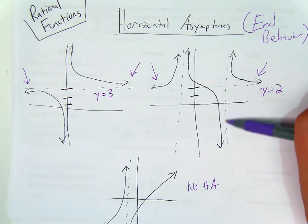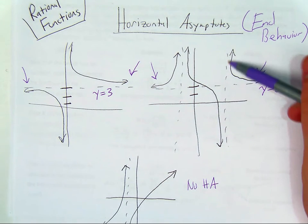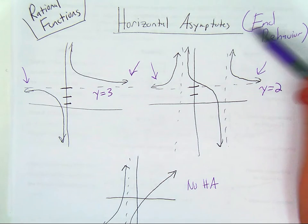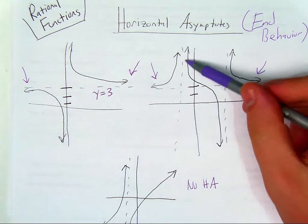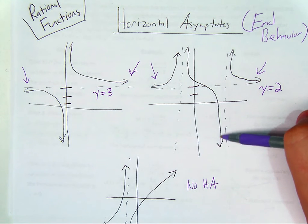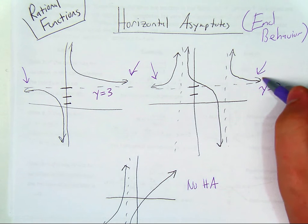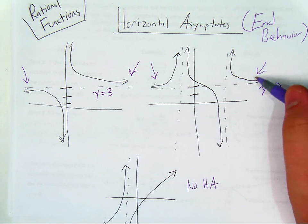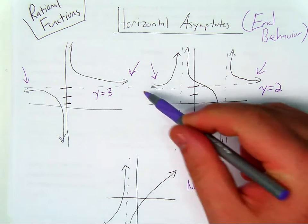Now unlike a vertical asymptote, which you cannot cross because it represents division by 0, horizontal asymptotes merely represent the end behavior of a function. Notice that in the middle it's possible that the graph could cross the horizontal asymptote. A horizontal asymptote just tells you about what happens to the graph as it approaches positive infinity and negative infinity.